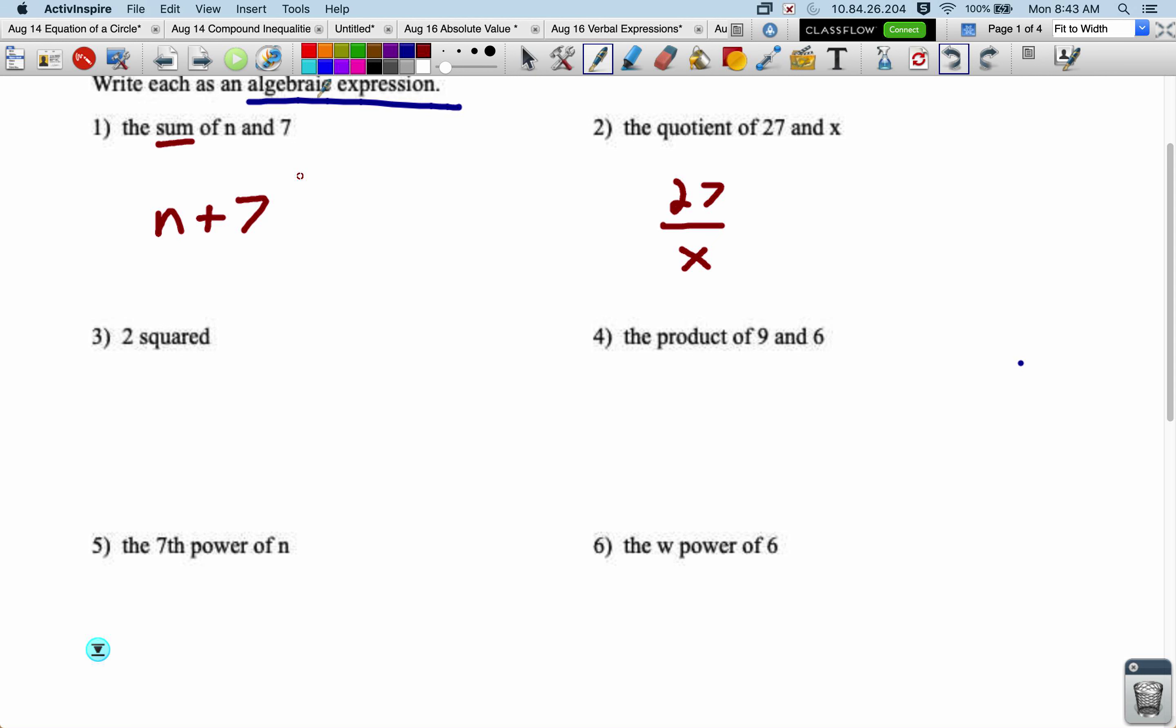Now, 2 squared, this is a word that tells us a specific exponent is being used, specifically a 2. So for it to be squared, the exponent has to be a 2.